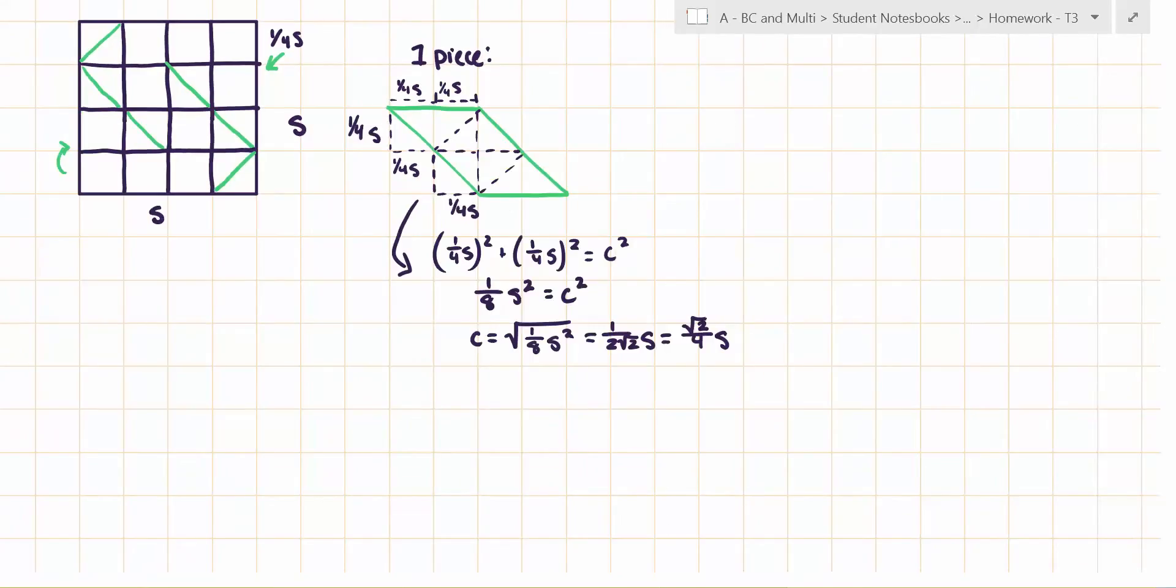So we know that the two sides of the triangles are 1/4 S, and we're trying to find the hypotenuse, which is one side of the square. So this would be (1/4 S)² + (1/4 S)² = C². So 1/8 S² = C², so C equals √2/4 S.